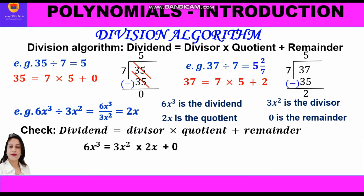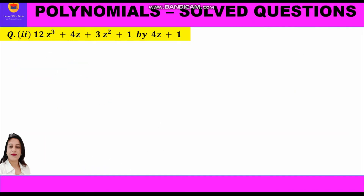We write 6x³ equals 3x² into 2x plus 0. Further, 6x³ equals 6x³, so left hand side equals right hand side. This is how we check our answer using the division algorithm. Now let us start with the second question.